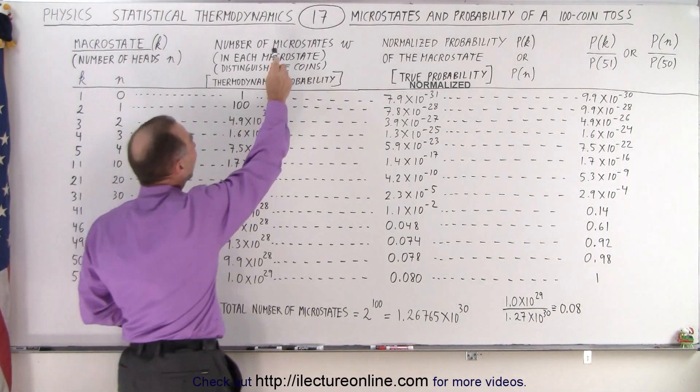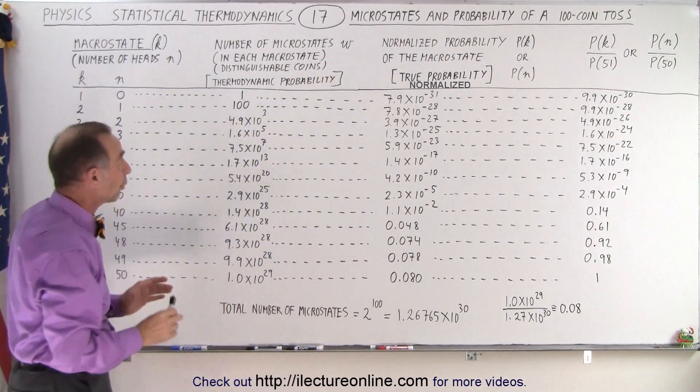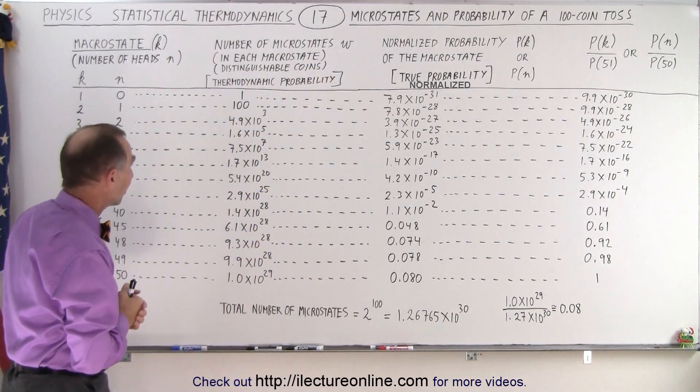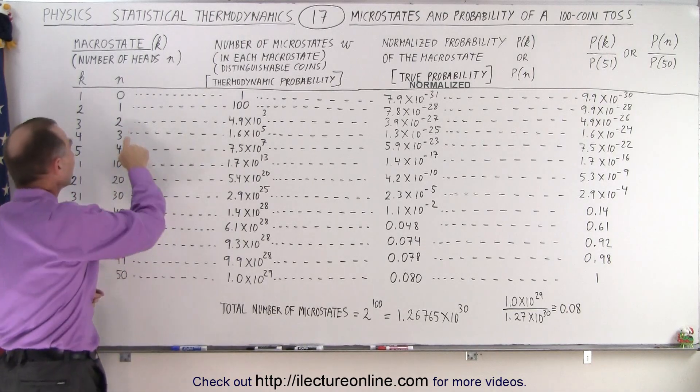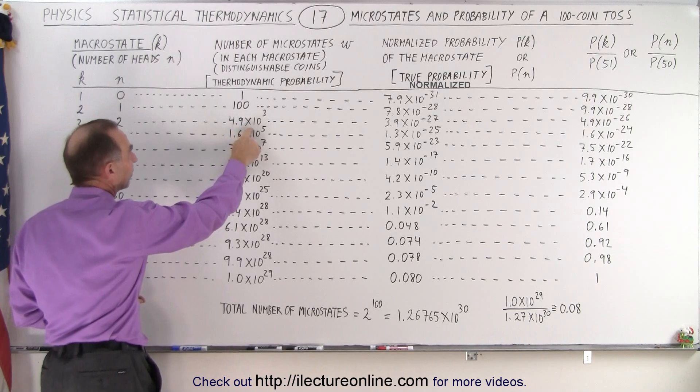Then we look at the number of microstates, and we use the letter W for that, and you'll see how W is very important in statistical thermodynamics. So you can see that when we look for two heads out of 100, there's 4.9 times 10 to the third, or 4,900 different ways in which it can happen,